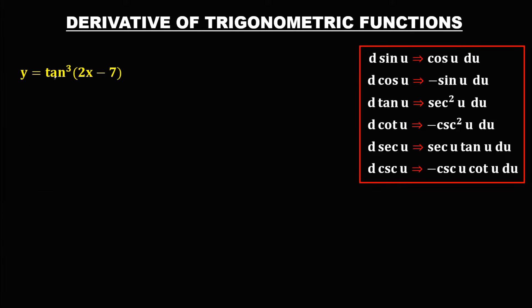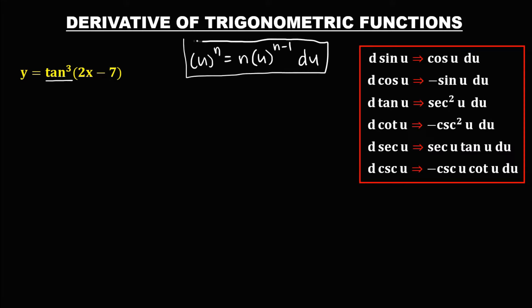For this given, if the function contains an exponent, we're going to use the general power formula. The general power formula is: the derivative of u to the power n equals n times u to the power (n minus 1) times the derivative of u. For this given, we first need to rewrite it, putting the exponent outside: tangent(2x minus 7) quantity to the power 3.